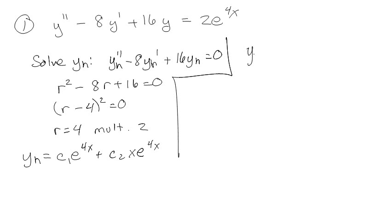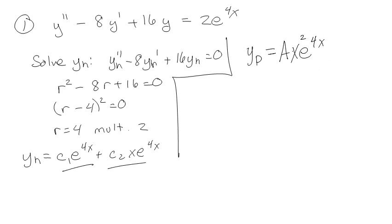But now for my yₚ particular guess — I'd just like to guess e^(4x), but I can't because there's already one in the homogeneous. I want an x in front, but I can't because there's already one there. So I have to add an x squared and put a coefficient out front. That's a good guess. If you got this guess, great. If you didn't, pause the video, guess correctly, and then see if you can solve for the coefficients.